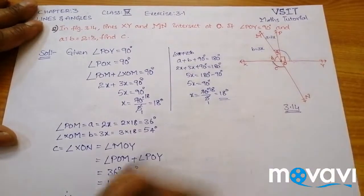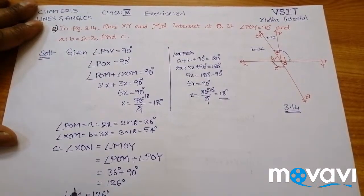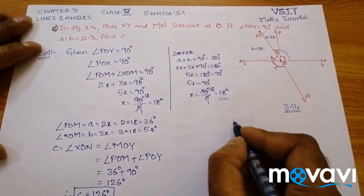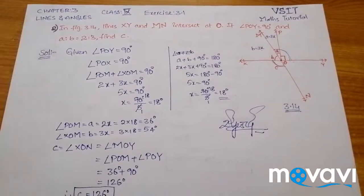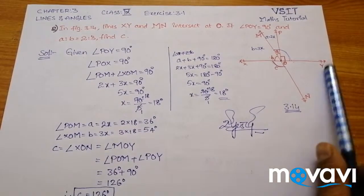Therefore angle C equals 126 degrees. That is the procedure to solve this problem. I hope you understood the content discussed in this video. If you are impressed, please don't forget to like this video, and if you have not subscribed to this channel, please subscribe. Thank you for watching.